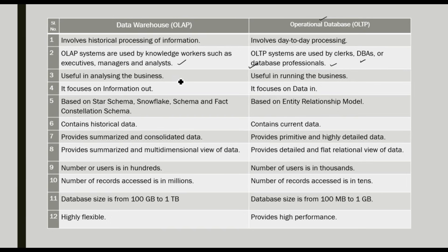The next point is useful in analyzing the business. OLAP is for analyzing the business, while OLTP is for running the business — when we have a college or any other business activity. OLAP focuses on information output, analyzing the business for decision making and better performance. It focuses on data. Next, OLAP is based on star schema, snowflake schema, and fact constellation schema.